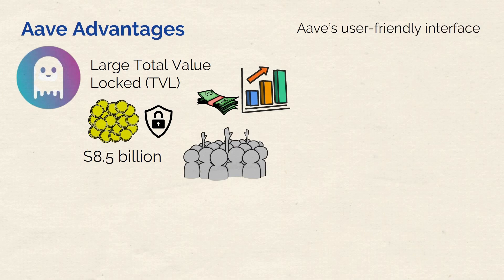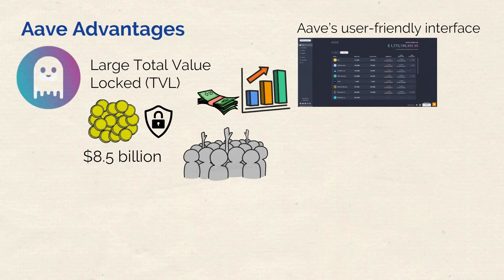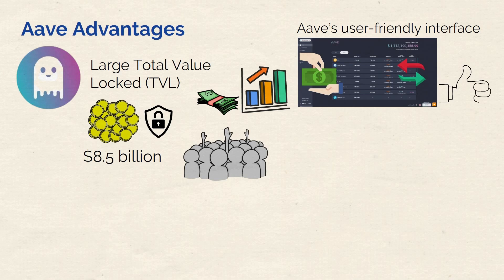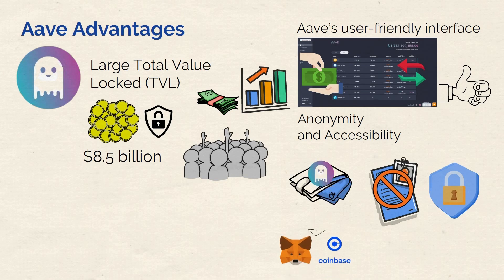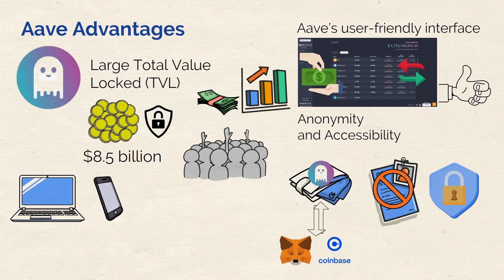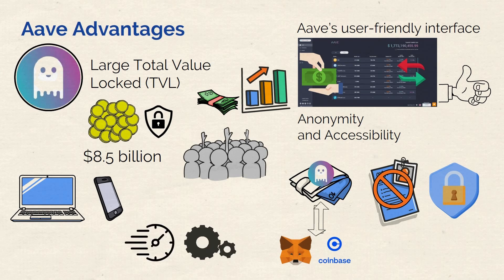Another upside is Aave's user-friendly interface. Aave's basic platform is really easy to use — even if you're a beginner or a seasoned investor, it's simple to get into lending, borrowing, or swapping without difficulty. A further advantage is Aave's anonymity and accessibility. Because Aave runs without needing know-your-customer or KYC requirements, users can enjoy full financial privacy. On top of that, its compatibility with various wallets like MetaMask and Coinbase, as well as both desktop and mobile platforms, expands how many users can access it. Finally, by offering flash loans and automated market makers, it creates an open playing field for investors to take away serious profits.